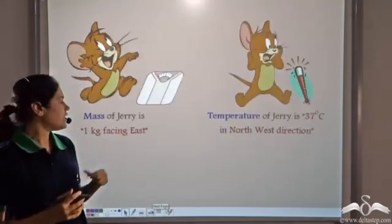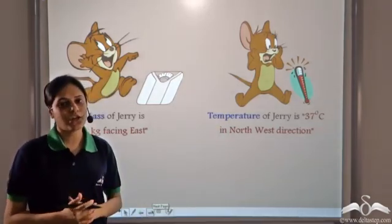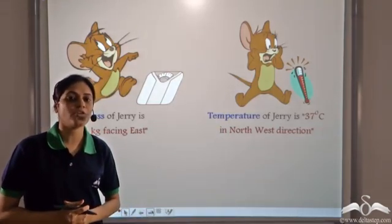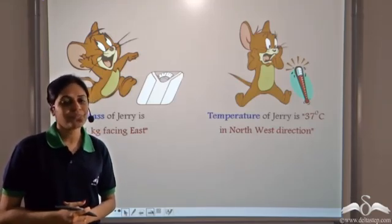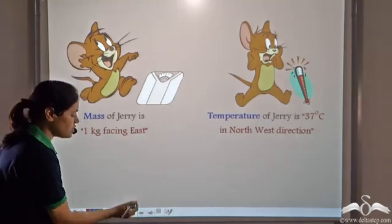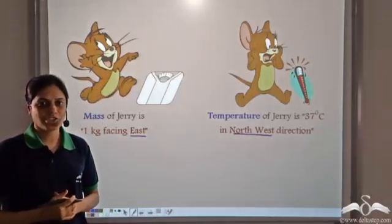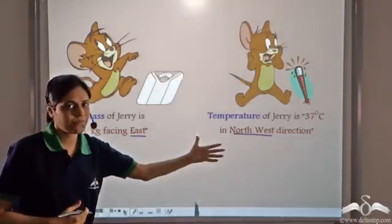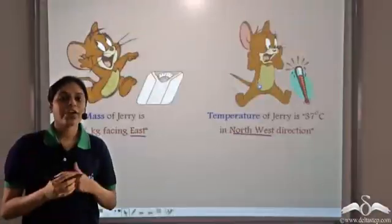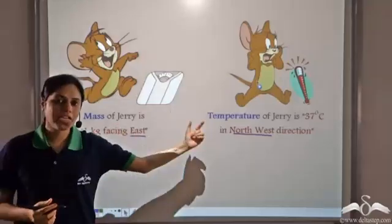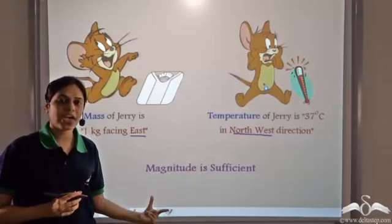Now if I tell you that the mass of Jerry is 1 kg facing east, or the temperature of Jerry is 37 degrees Celsius in the north-west direction — do you find something strange about it? The directions mentioned, east and north-west, are irrelevant because mass in east or mass in west, it's all the same. So there are certain quantities like mass and temperature for which only the magnitude is sufficient to describe them completely.